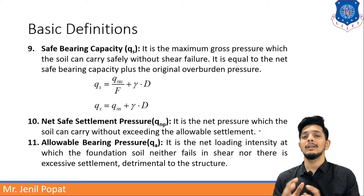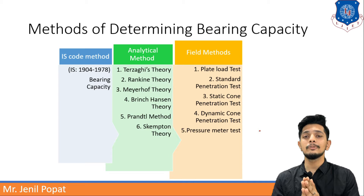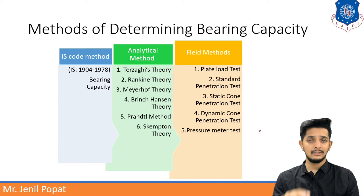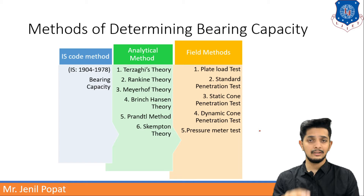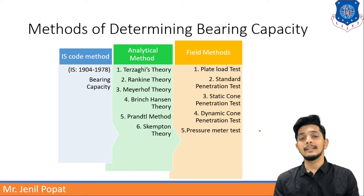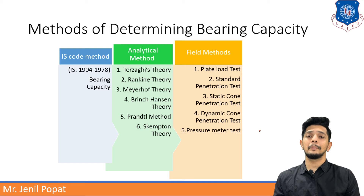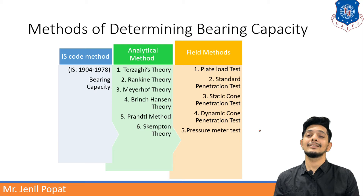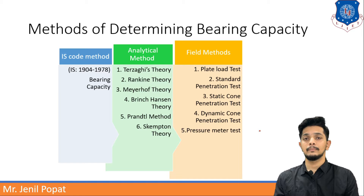Methods of determining bearing capacity can be divided into three portions. First, IS code method — Indian Standard code method, IS 1904 — used widely in India. Second, analytical methods like Terzaghi's theory, Rankine's theory, and other methods, with Terzaghi's and Rankine's being most popular. Third, field methods: plate load test, SPT, SCPT, DCPT, and pressuremeter test — among which plate load test is most popular.